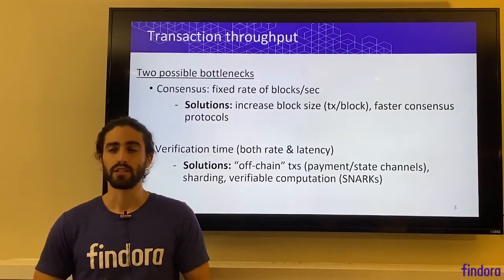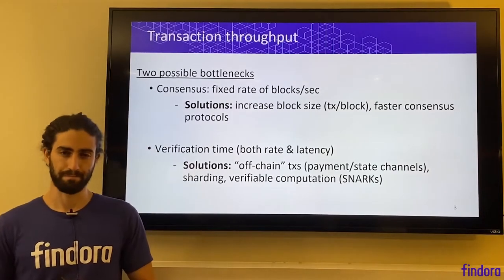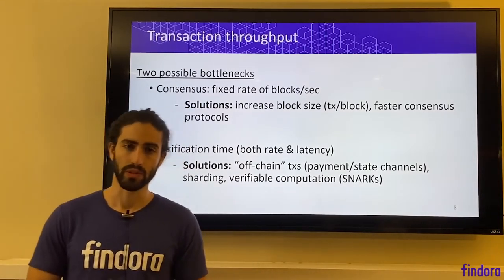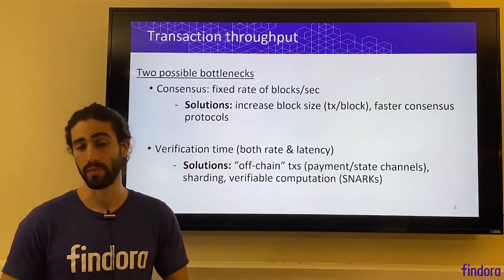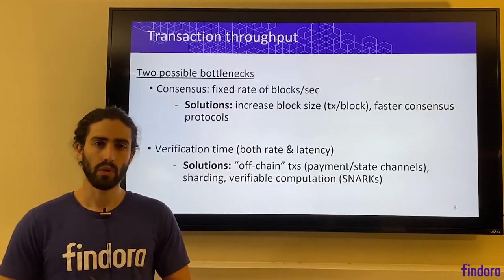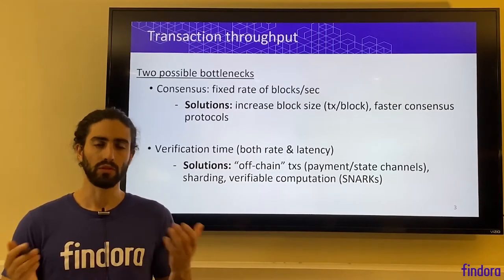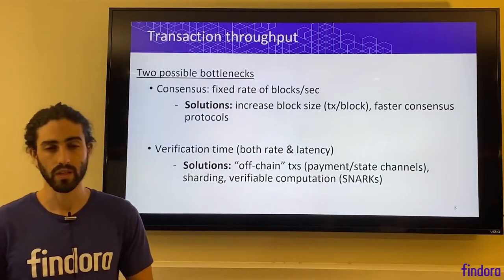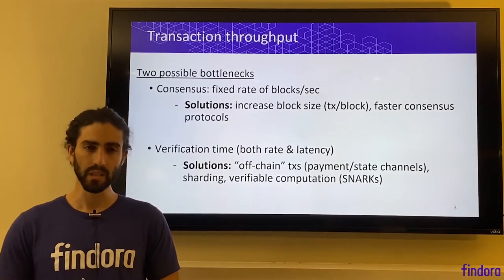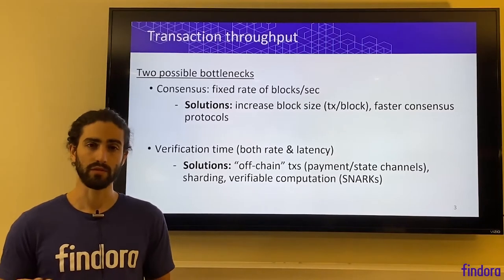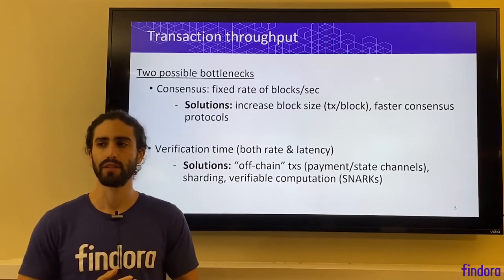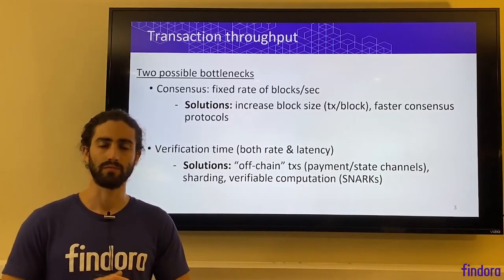Focusing first on transaction throughput, there are two possible bottlenecks. One is the consensus protocol — which we haven't talked about in detail yet other than the Bitcoin consensus protocol at a very basic level. The consensus protocol is the protocol that multiple validators of a blockchain database run in order to agree on transactions before they're committed to the database. Often consensus protocols are the bottleneck for transaction throughput, and they place a limit of a fixed rate of blocks per second.